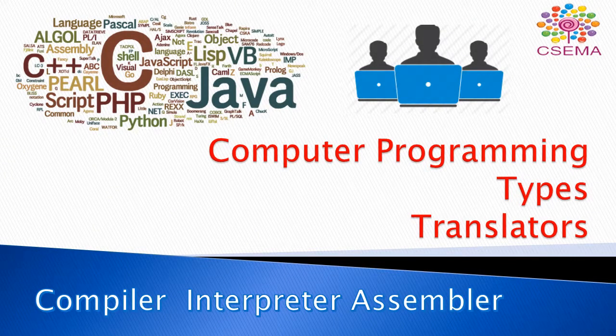Welcome to CSCMA. We know that language plays an important role in communications. When you are communicating to someone, or we are trying to communicate with machines, we require a language that is basically a set of rules and block of codes used to communicate with computers or machines. In this video, we are going to learn about computer programming and what kinds of programming languages are used and how these languages are understood by computer machines.